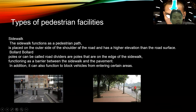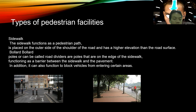Types of pedestrian facilities. One: sidewalk. The sidewalk functions as a pedestrian path, placed on the outer side or shoulder of the road, and has a higher elevation than the road surface.